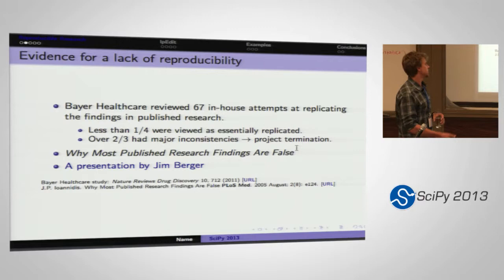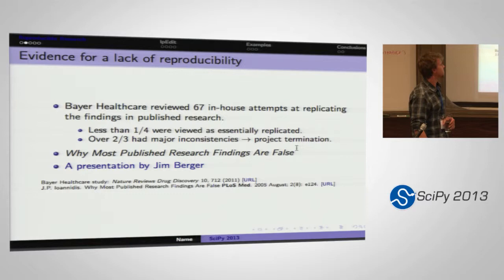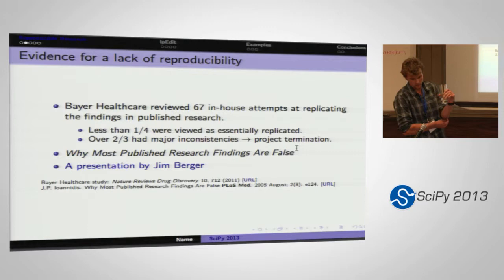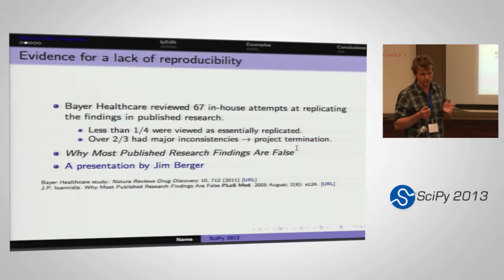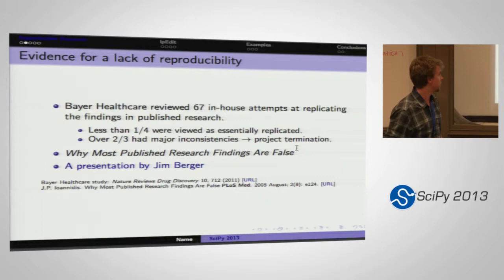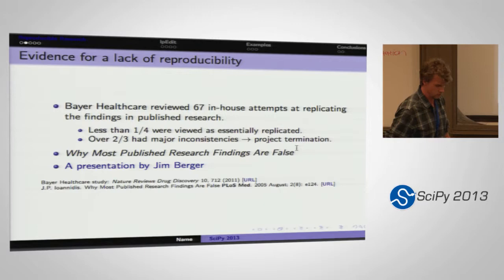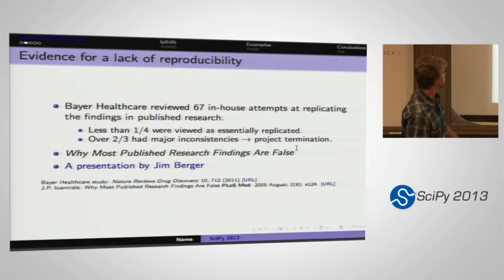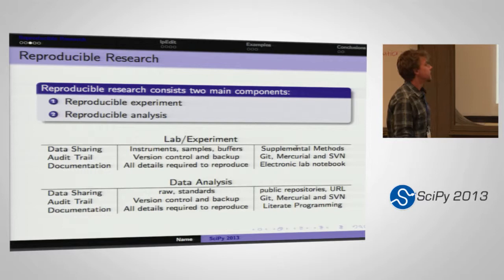There have been a couple of meta-studies showing that things really aren't that reproducible. There was a large healthcare study with 67 attempts at reproducing findings reported in higher-tier journals — less than a quarter were viewed as being replicated, and two-thirds had major inconsistencies. In terms of reproducible analyses, there's really no excuse for not being able to get the same numbers if we start with the same input data. A great presentation by Jim Berger from Duke University also talks about many of these statistical issues.